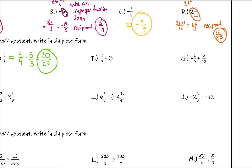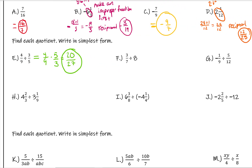Example F is 3 sevenths divided by 8. Remember that a whole number as a fraction is just that number over 1. So we turn it into a multiplication problem: 3 sevenths times 1 over 8. Then 3 times 1 is 3 and 7 times 8 is 56. We check whether 56 is divisible by 3 — it is not — so 3 over 56 is already in simplest form.